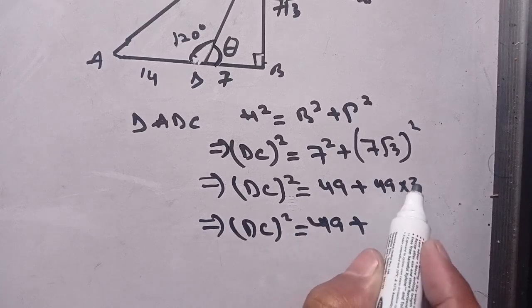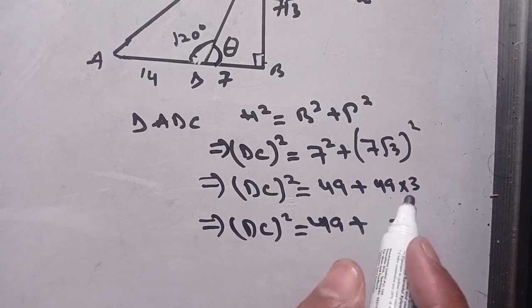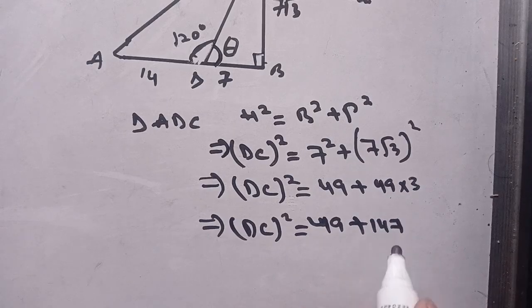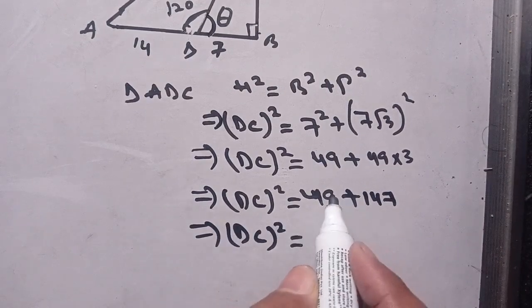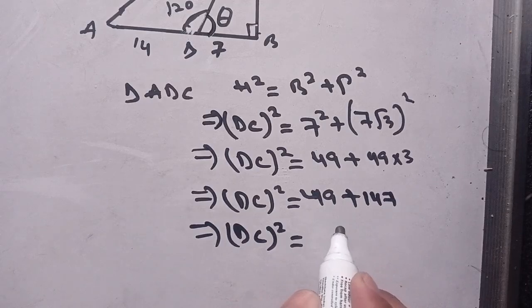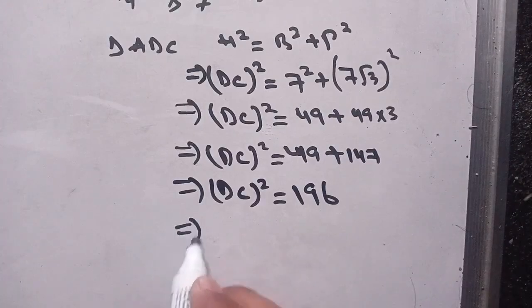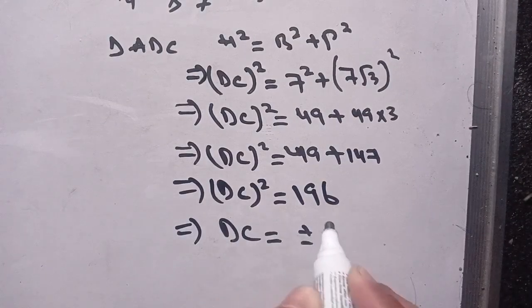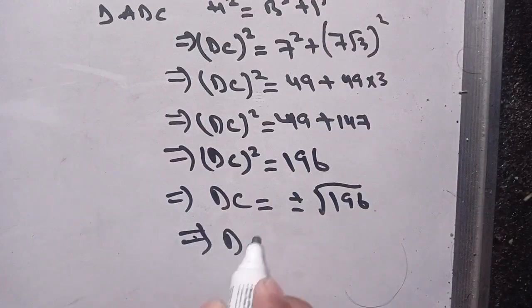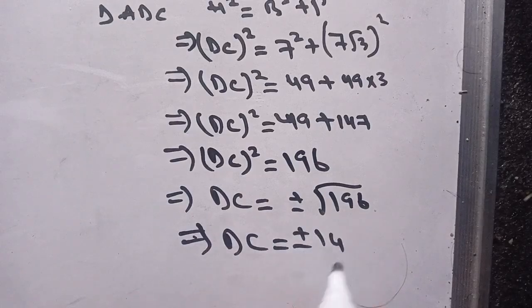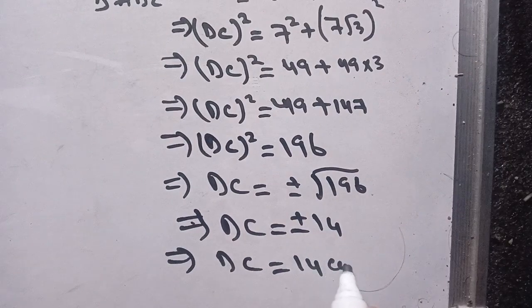So DC squared equals 49 plus 147, which equals 196. This implies DC equals plus or minus square root of 196, which gives DC equals plus or minus 14. Since DC is a length, DC equals 14 centimeters.